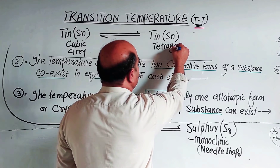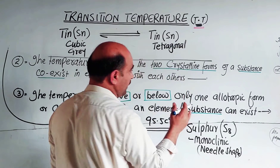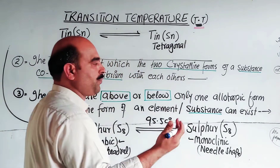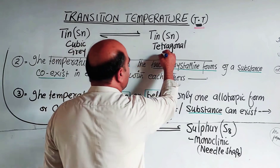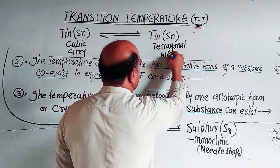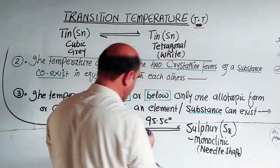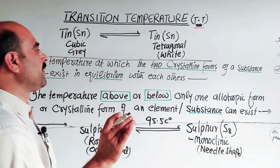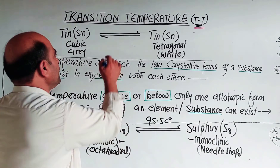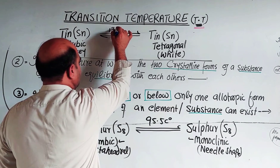The gray form has a cubic crystal structure. The second form is white tin, which has a tetragonal shape — the structure changes and the physical properties change. The white form is colorless or white. The transition temperature of tin is 13.2°C.